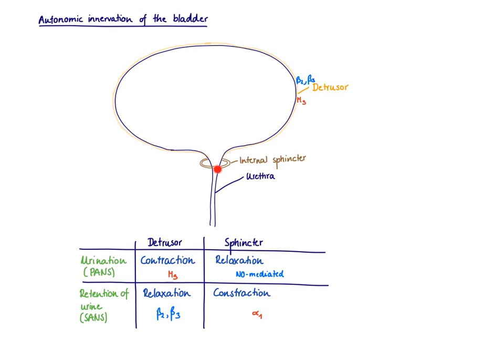The sphincters need to be relaxed when we want to void. We also know that the effector functions of the parasympathetic nervous system are mediated by muscarinic receptors.